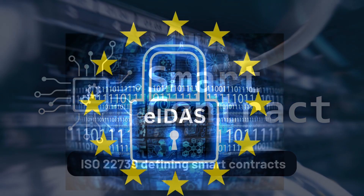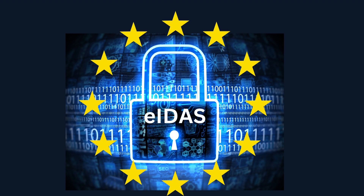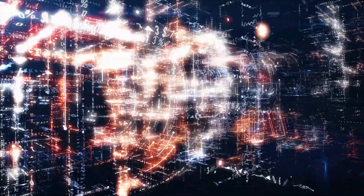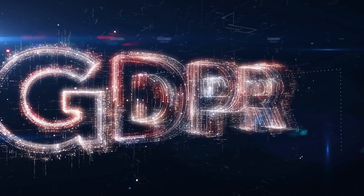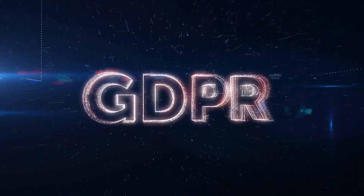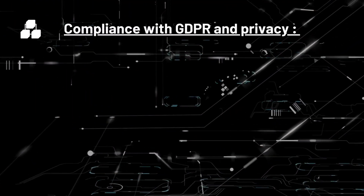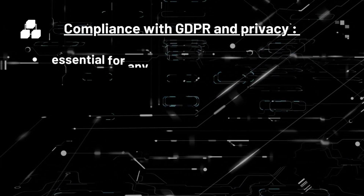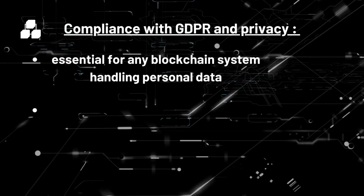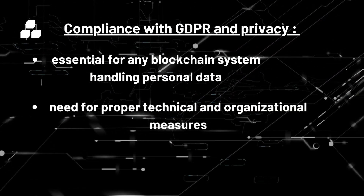Furthermore, the EU, by means of the Electronic Identification, Authentication and Trust Services Regulation — better known as EIDAS — has provided a legal framework on electronic identification and trust services for electronic transactions in support of the European single market. The impact of the General Data Protection Regulation on blockchain is crucial, as blockchain systems handling personal data must adhere to GDPR principles such as purpose limitation, accuracy, data minimization, confidentiality, integrity, and transparency. Compliance with GDPR and privacy by design principles is essential for any blockchain system handling personal data, emphasizing the need for proper technical and organizational measures to ensure data protection.